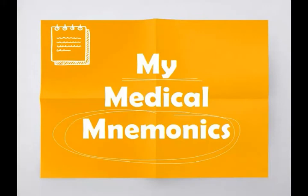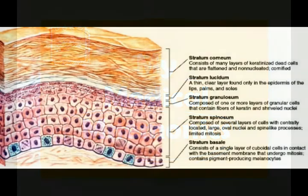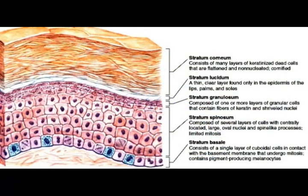Hello viewers, welcome to the channel 'My Medical Mnemonics.' Now we are going to see a mnemonic to remember the names of layers of the epidermis. The epidermis is the outermost layer of skin and has five layers: stratum corneum, stratum lucidum, stratum granulosum, stratum spinosum, and stratum basale (stratum germinativum).